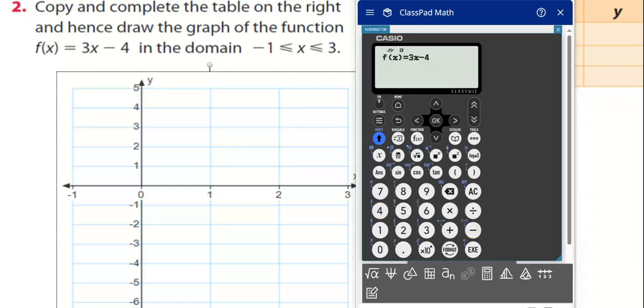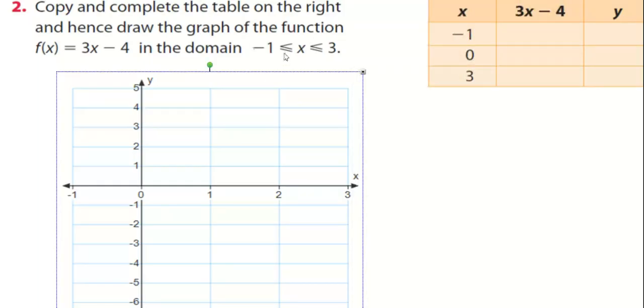Press execute and it disappears. What that means is it's stored, it's now stored in the calculator. Now press home, and then press table because we're about to make a table.